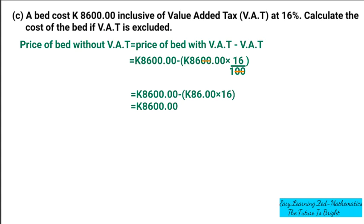1,376 kwacha is the value of VAT when we convert that percentage into money. Now I'm going to subtract that from 8,600 kwacha. The difference between 8,600 kwacha and 1,376 kwacha is 7,224 kwacha. So this is the actual price of the bed without VAT.